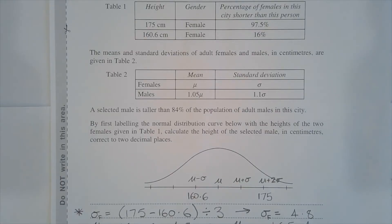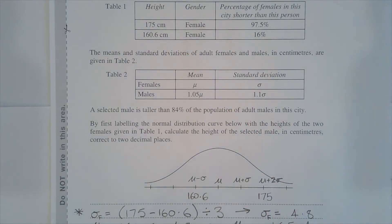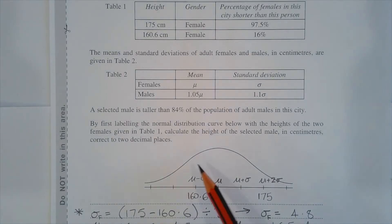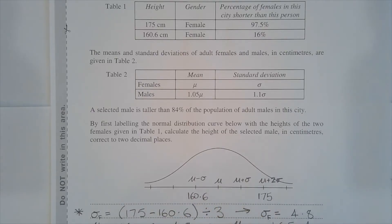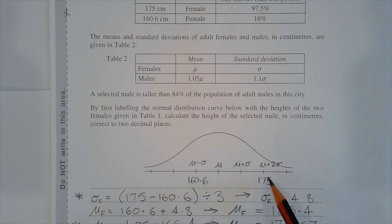By the empirical rule, a female of height 175 centimetres is two standard deviations above the mean, and a female of height 160.6 centimetres is one standard deviation below the mean. There are three standard deviations in between 160.6 and 175. The standard deviation of the female population, sigma f, is equal to 175 minus 160.6 — that's the difference between these two heights — divided by three. So sigma f is equal to 4.8 centimetres.